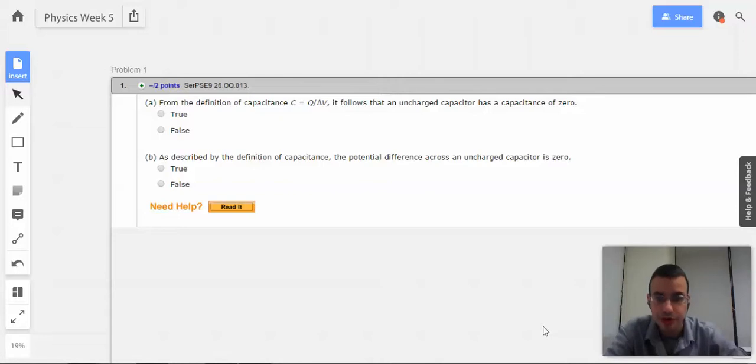Homework 5, problem 1. From the definition of capacitance, C equals Q over delta V, it follows an uncharged capacitor has a capacitance of 0. Hmm. Uncharged capacitor? No, okay.